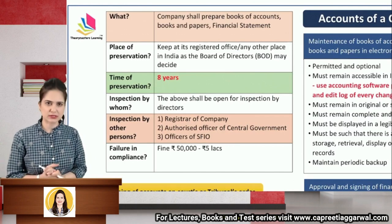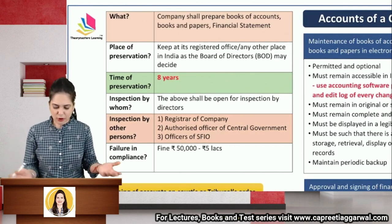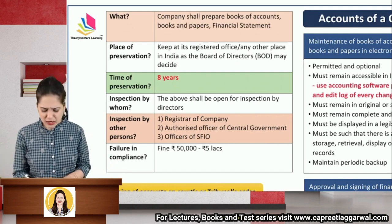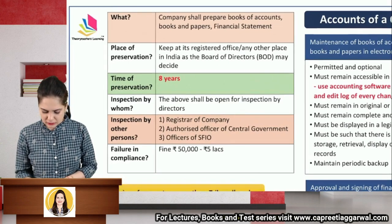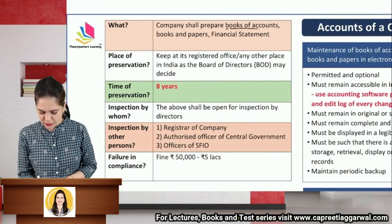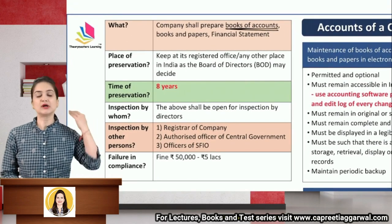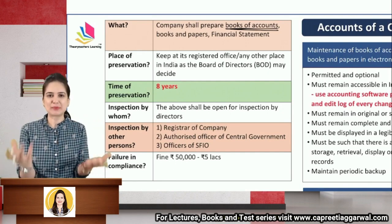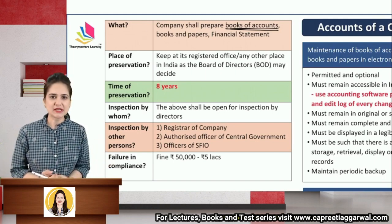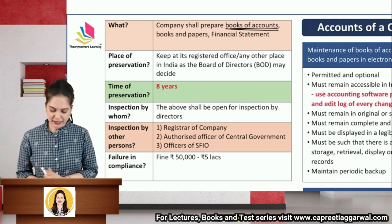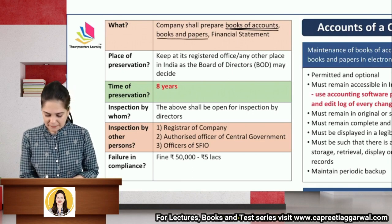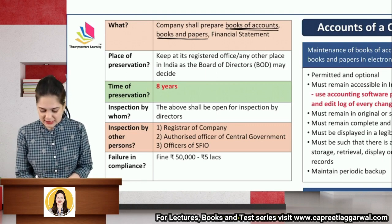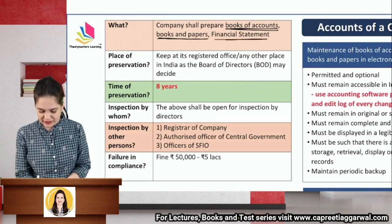A company shall prepare books of accounts. Books of accounts will include books and records maintained for goods sold, goods purchased, cash received, cash paid, and records of assets and liabilities. The company will also maintain other books, papers, documents, vouchers, other supporting documents, and financial statements.